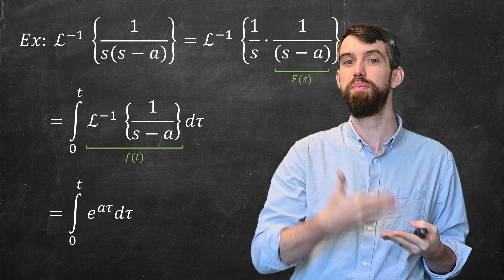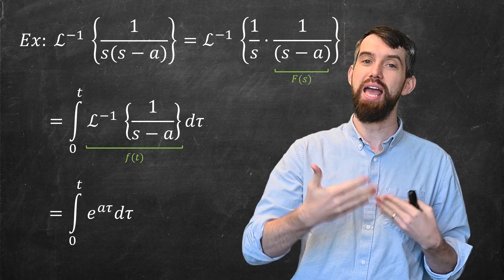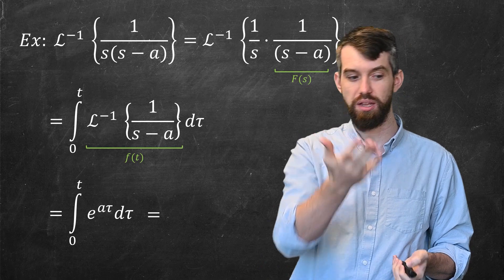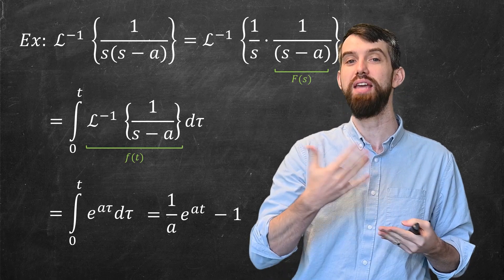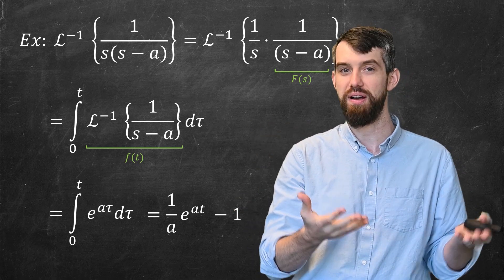So this is the same thing as the integral from 0 up to t of e^(aτ)dτ. That's an integral I can compute, and so I get 1 over a times (e^(at) - 1) when I evaluate that particular integral.